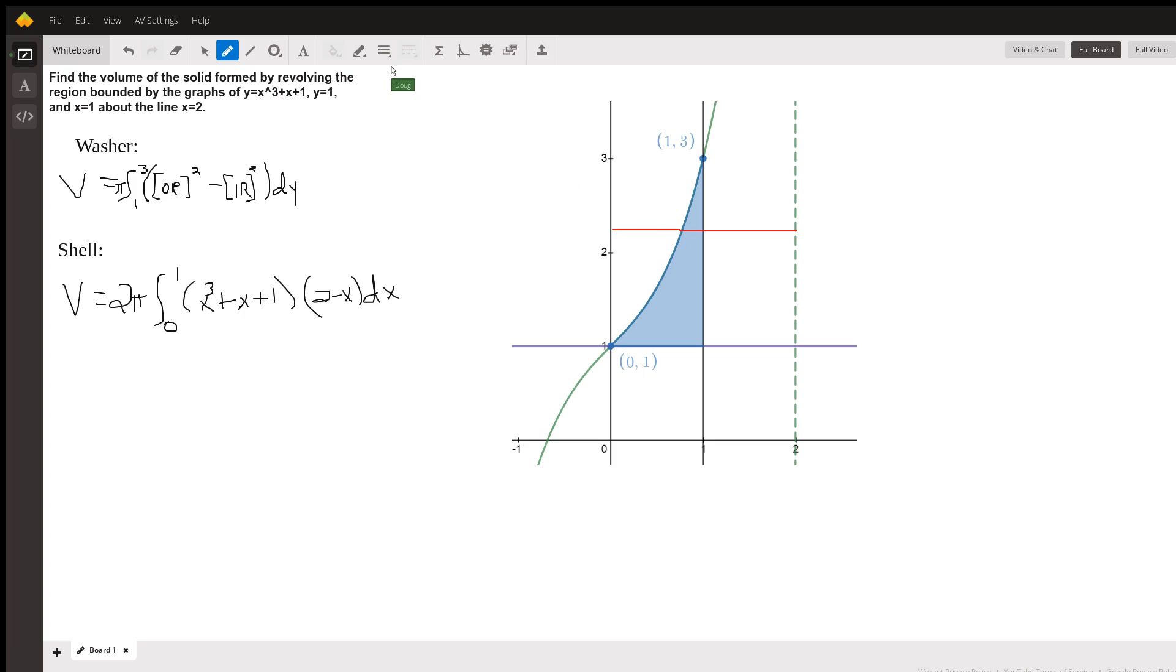I wanted to use a dotted line there, or a green one, in terms of y. So we'd have to solve this equation right here for x in terms of y. Not so easy to do.